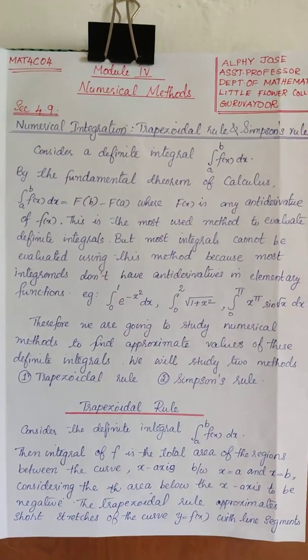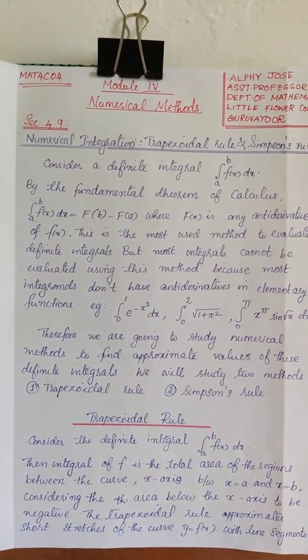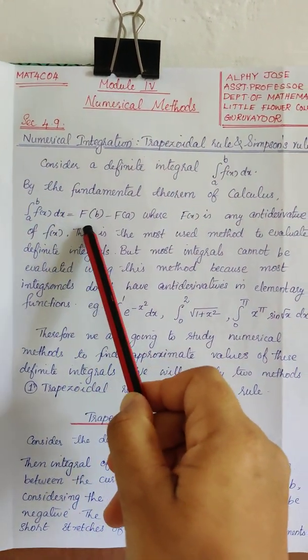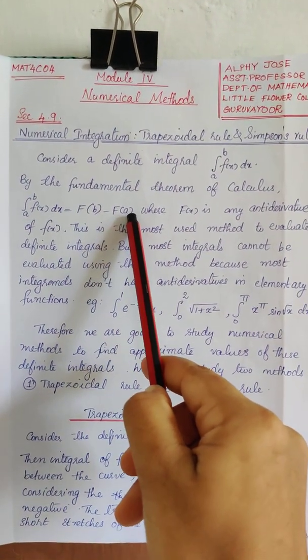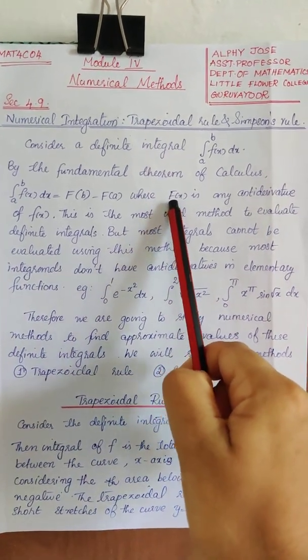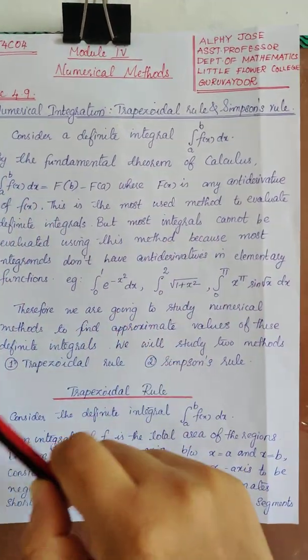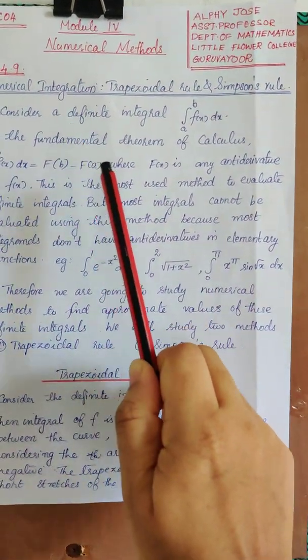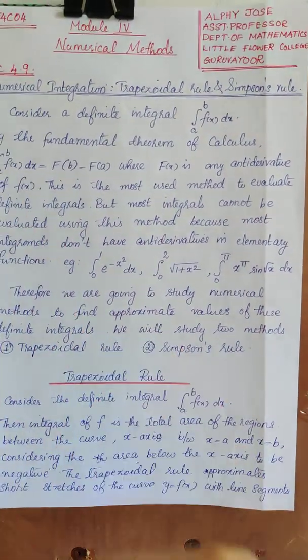Consider a definite integral integral a to b f of x dx. By fundamental theorem of calculus, integral a to b f of x dx is f of b minus f of a where capital F of x is any antiderivative of f of x. This method you all know and this is the most used method to evaluate definite integrals.